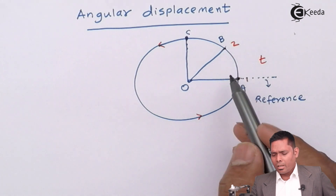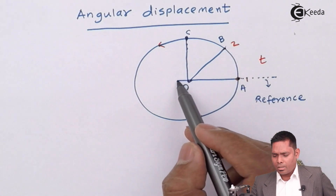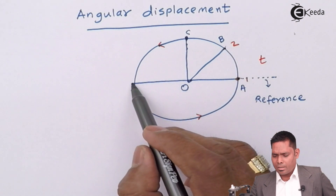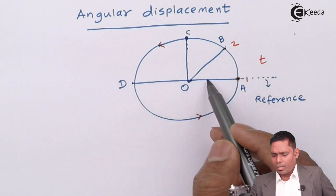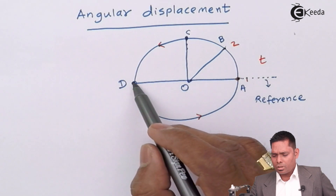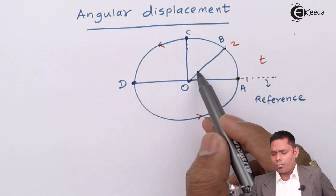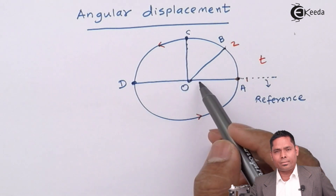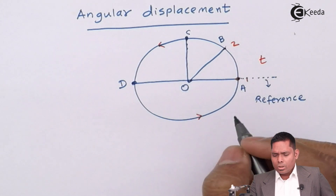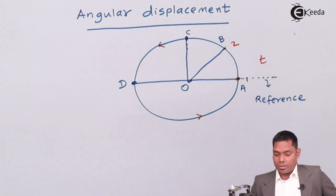If the particle is at exactly the opposite end of the diameter, suppose this point is D, then this position corresponds to 180 degrees or pi radian. So that is the angular position.